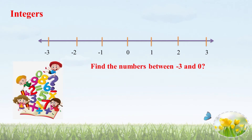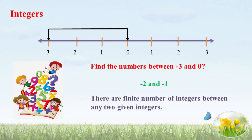Students, find the numbers between minus 3 and 0. This is the integer number line. What are the numbers between minus 3 and 0? Minus 2 and minus 1. Here, we can count the numbers between two integers. There are a finite number of integers between any two given integers.